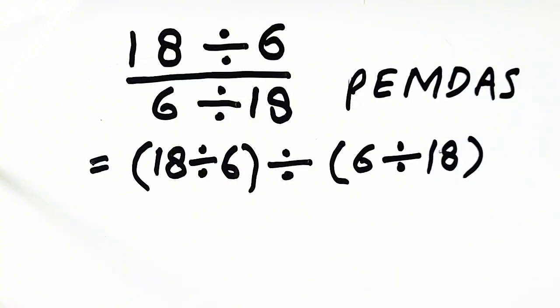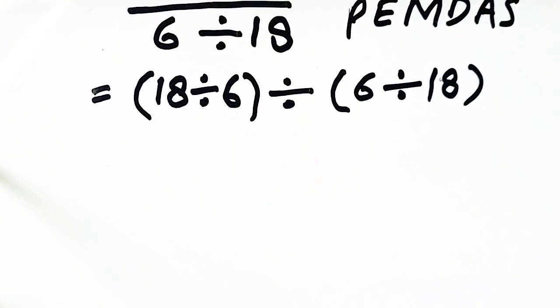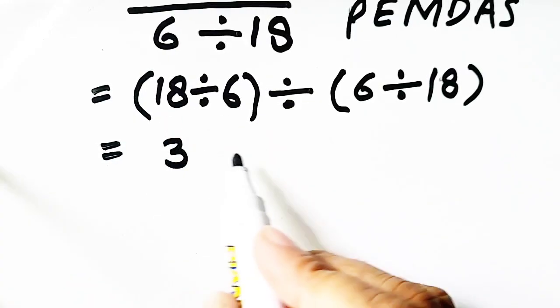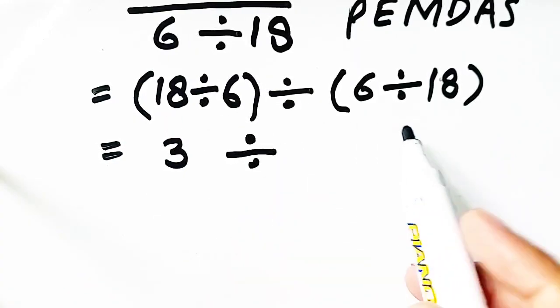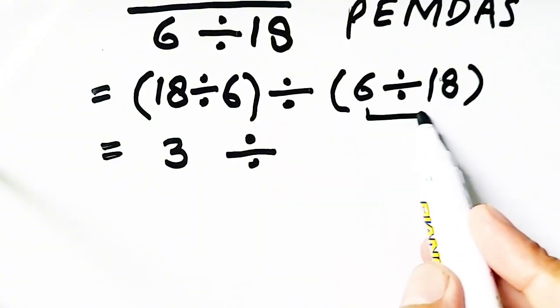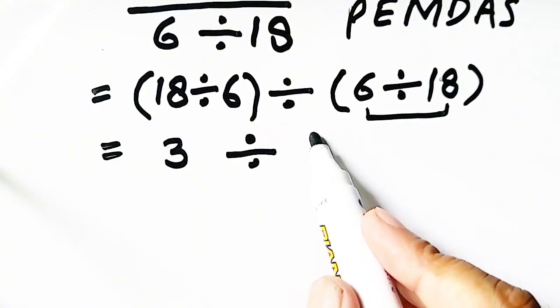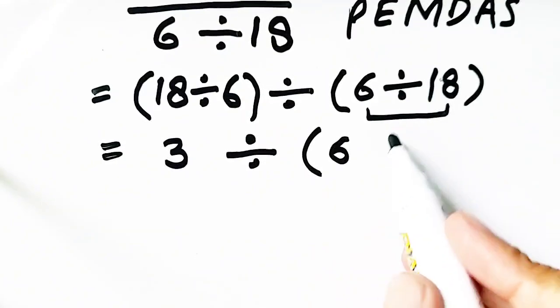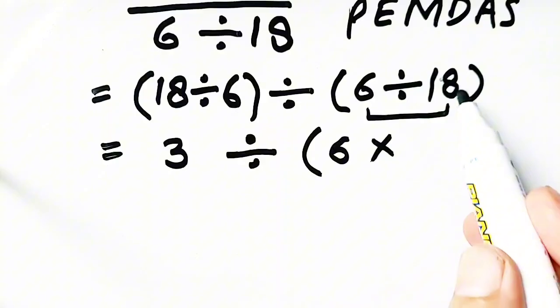Furthermore, 18 divided by 6 is equal to 3, divided by... we apply the KCF rule here. K means keep it, C means change it, so division is changed into multiplication.